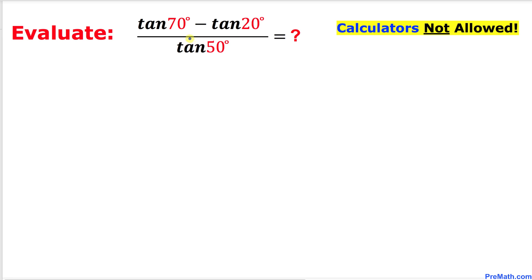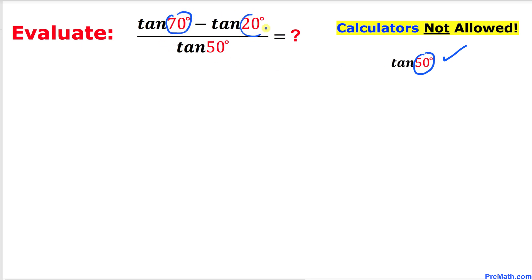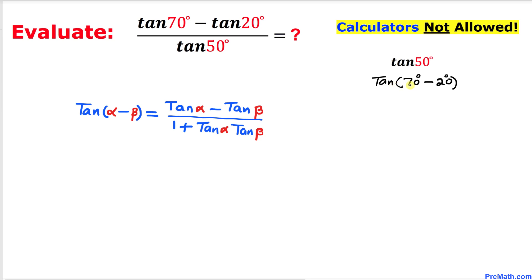The very first thing we are going to do is focus on the denominator part — tangent of 50 degrees. We are going to write this 50 degrees in terms of 70 and 20 degrees, so we can write tangent of 50 degrees as tangent of (70 minus 20) degrees. We can see we have a tangent of a difference of two angles, so we apply the formula: tangent of (alpha minus beta) equals tangent of alpha minus tangent of beta, divided by 1 plus tangent of alpha times tangent of beta.